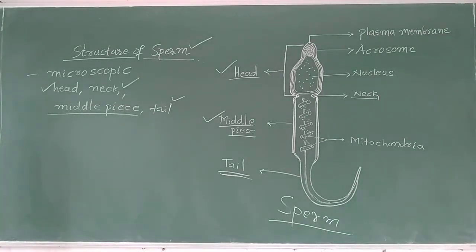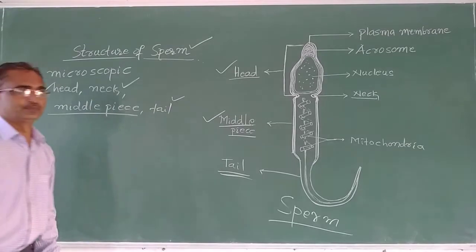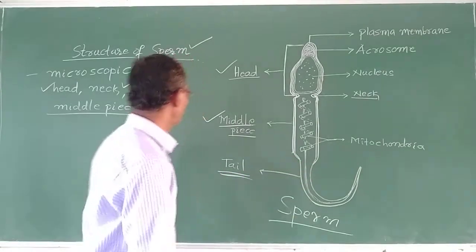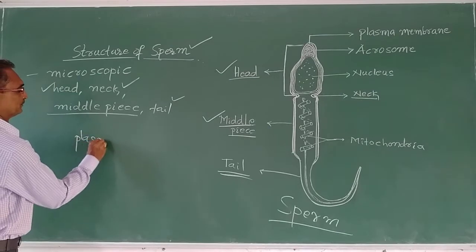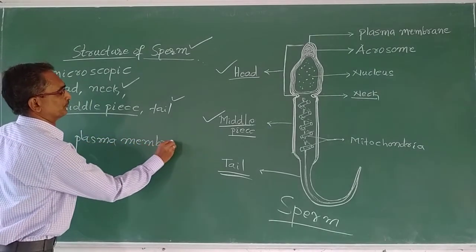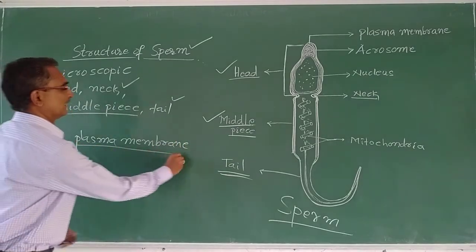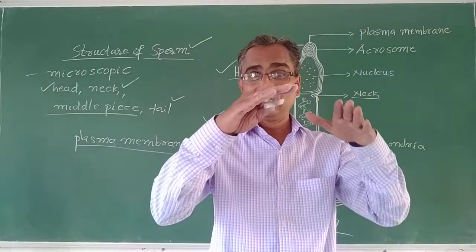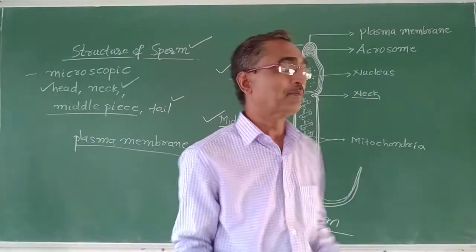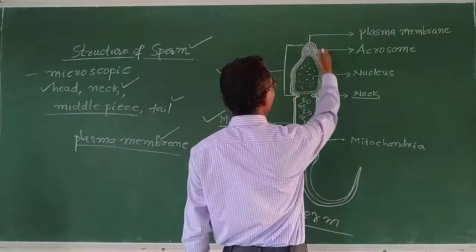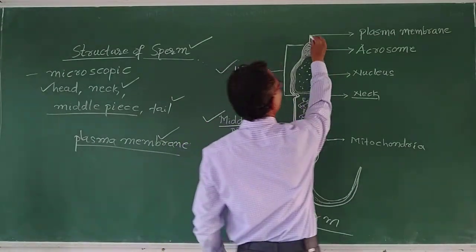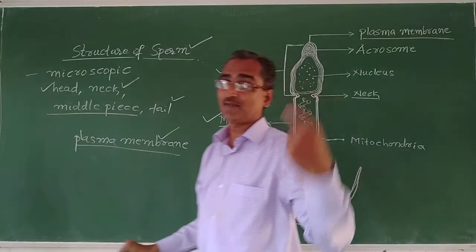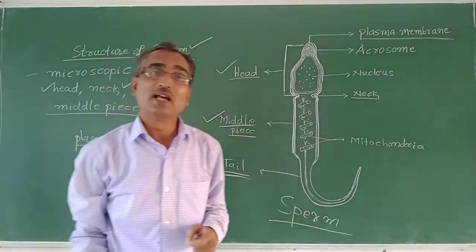Let us discuss more about the sperm. The whole body of the sperm is covered or enveloped — surrounded — by a plasma membrane. This outermost covering or envelope surrounding the sperm is nothing but the plasma membrane.